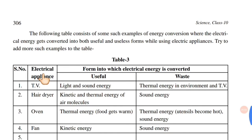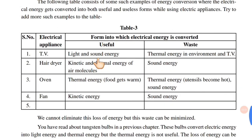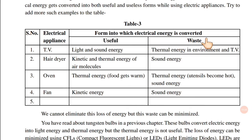The following table consists of some examples of energy conversion where electrical energy gets converted into both useful and useless forms while using electric appliances. Try to add more such examples to the table. For example, a TV converts electrical energy into useful light energy and sound energy, while waste energy produced is thermal energy.